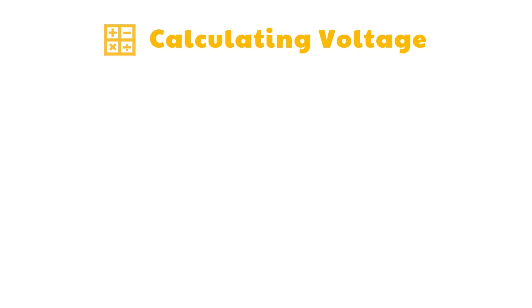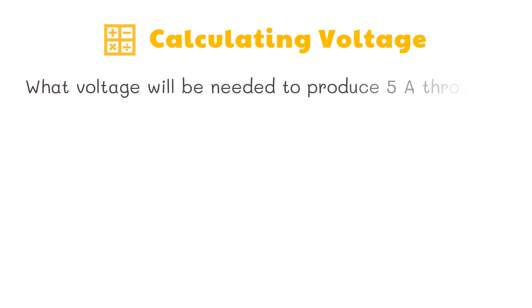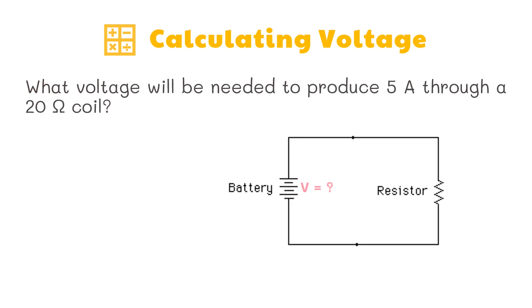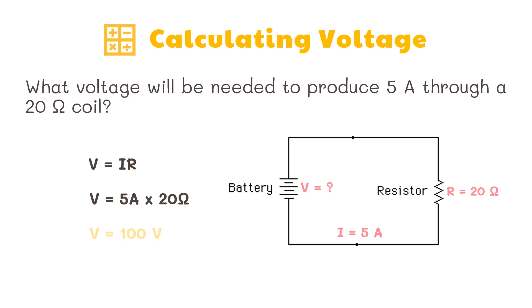Alright, let's try this last one. We will be solving for voltage. What voltage will be needed to produce 5 amperes through a 20 ohm coil? We have the formula voltage equals current times resistance. The given current is 5 amperes times the given resistance of 20 ohms. So we need 100 volts to produce 5 amperes in the coil.